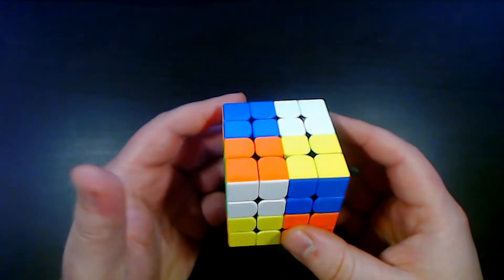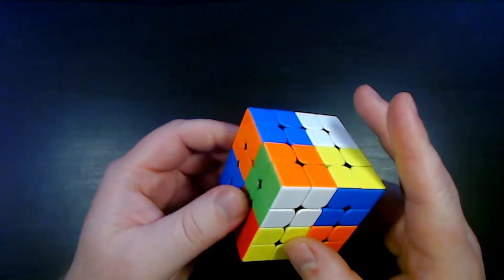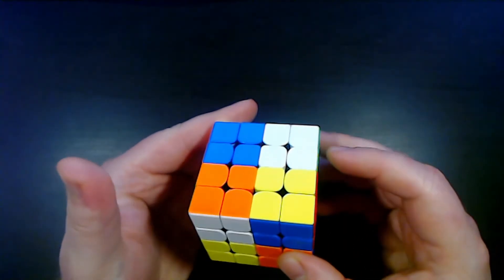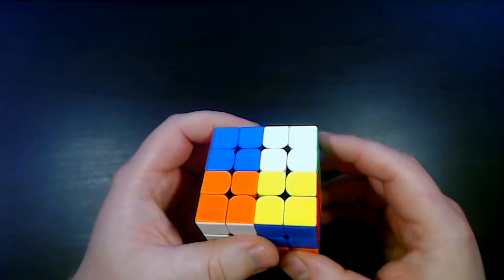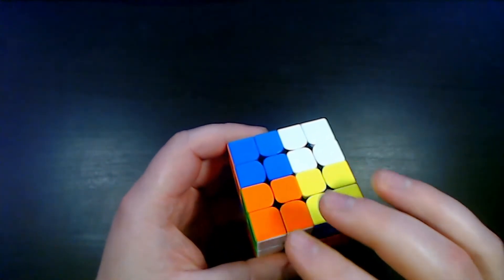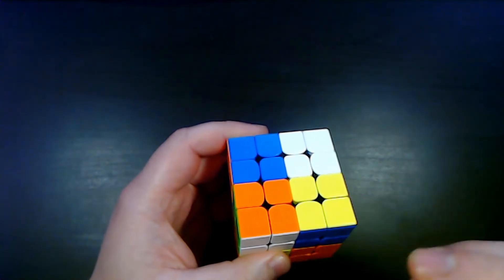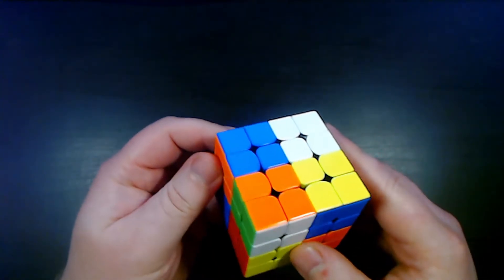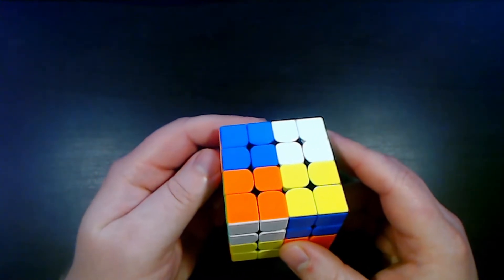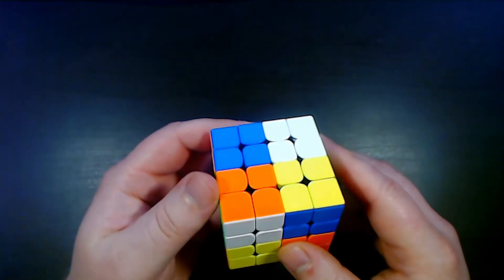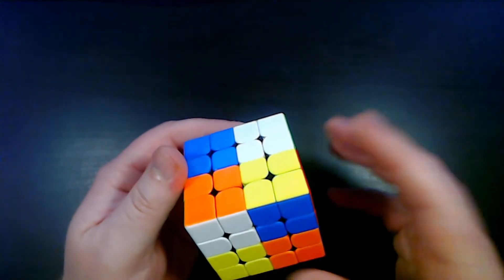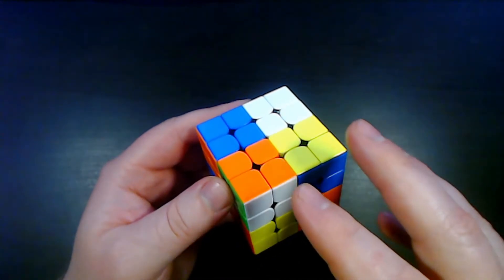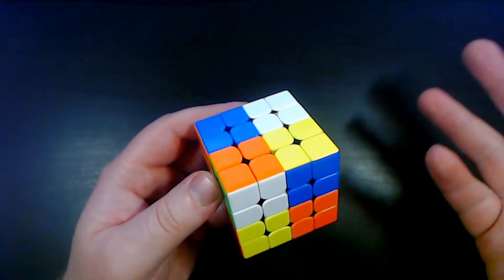So after the first six corners we move on to the last two corners. This step is where the moveset you have available is the most restricted so I created this whole alg set with the idea of being able to solve every case that you could come up with using just one algorithm. I never actually got around to finishing the alg set but I came far enough that you can solve a very good number of the cases with just one alg and the rest of the cases could be solved with two algs using one setup alg to set up one of the cases that I do have an algorithm for.